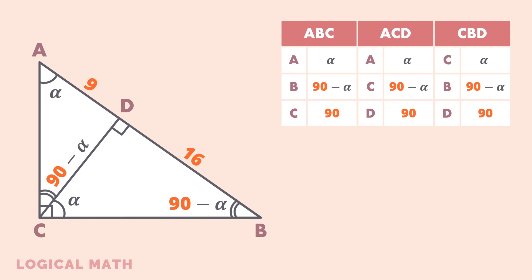As we can see, all triples of corresponding angles are the same, which means that the triangles are similar, so the corresponding sides are in proportion.